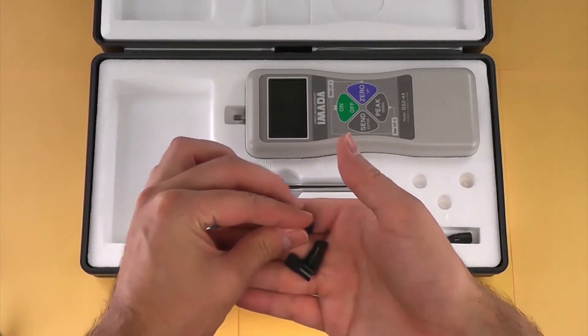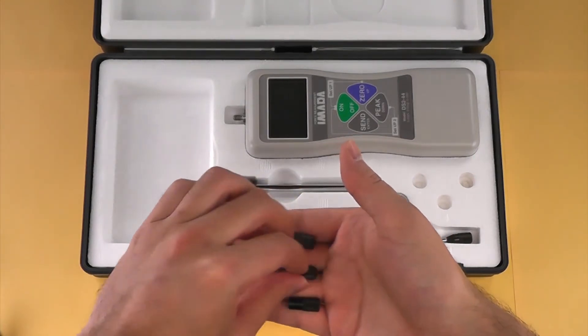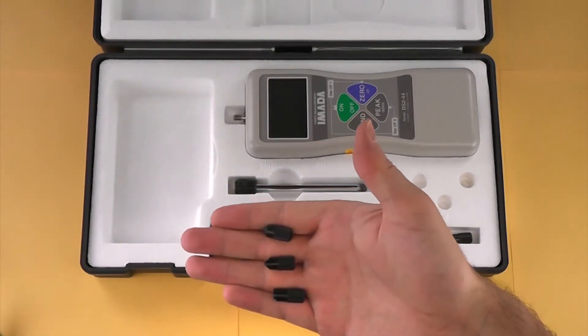The DS2 force gauge kit also includes a chisel tip, conical tip, and notch tip attachments.